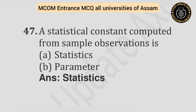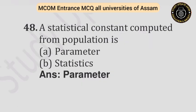Question number forty-seven: A statistical constant computed from sample observations is — Option A: Statistics. Option B: Parameter. Answer is statistics. Question number forty-eight: A statistical constant computed from the population is — Option A: Parameter. Option B: Statistics. Answer is parameter.